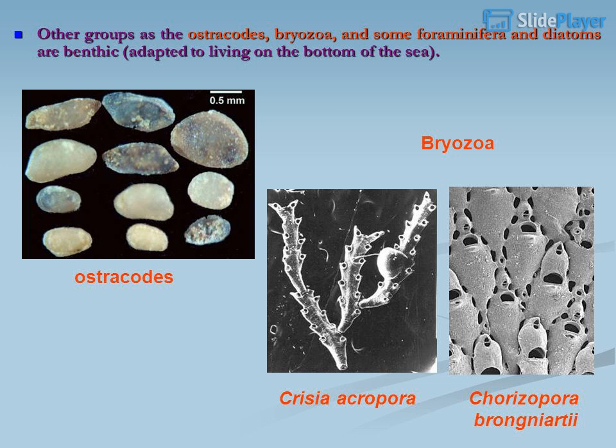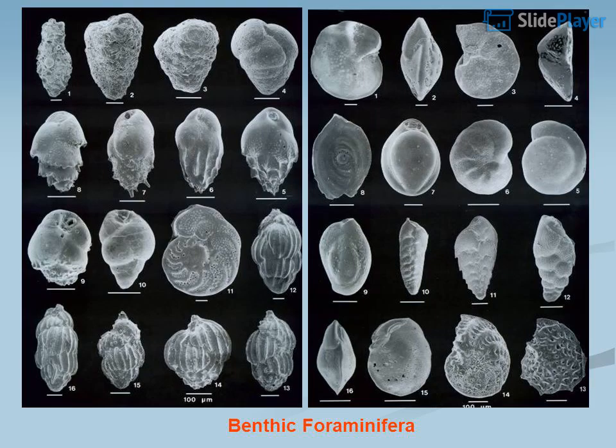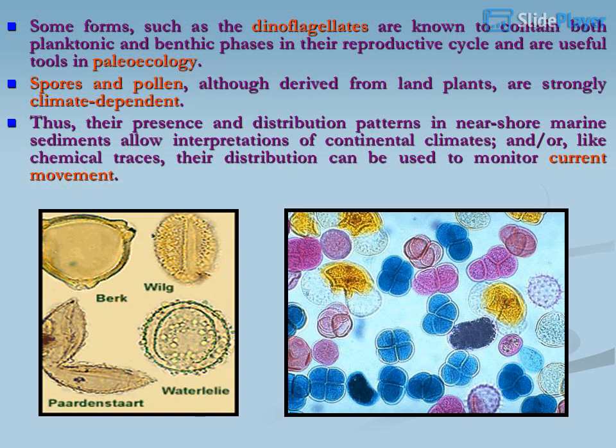Ostracodes, Bryozoa, and other benthic forms. Benthic Foraminifera. Benthic Marine Diatoms. Some forms, such as the dinoflagellates, are known to contain both planktonic and benthic phases in their reproductive cycle and are useful tools in paleoecology.